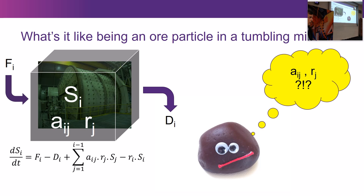Hopefully you're not quite as confused as this ore particle about this equation. This is, of course, the basic form of the population balance equation that we use in the SimVet and other models, where we try to track how the change in the contents of the mill — defined by its size distribution — occurs as a function of what we're putting into the mill, what's coming out, and breakage processes going on inside. These are breakage rates, and this is the appearance function — what particles break into. The question is, if I'm an individual ore particle sitting inside that mill, do I have a conception of what the appearance function would be for me and every other particle like me?